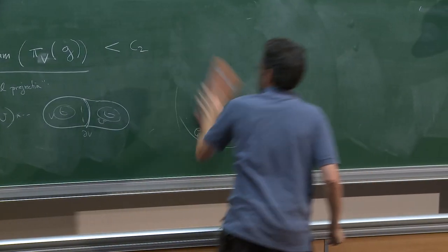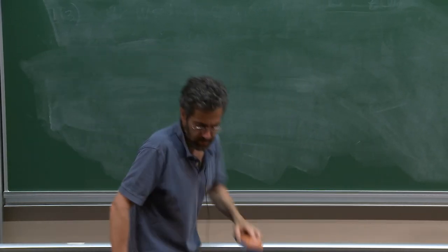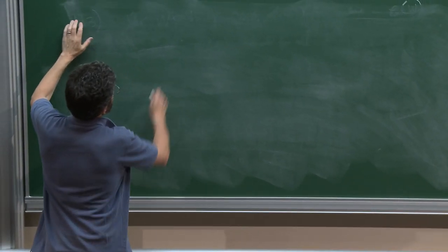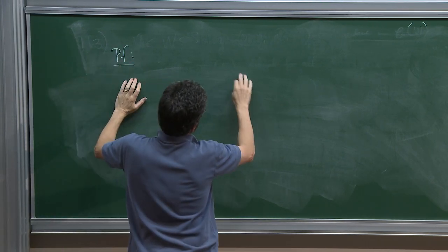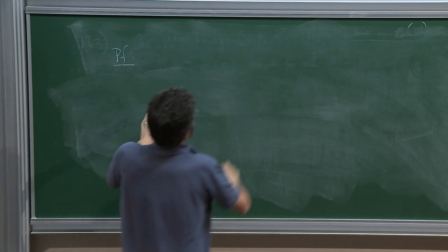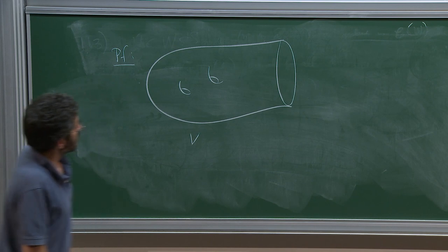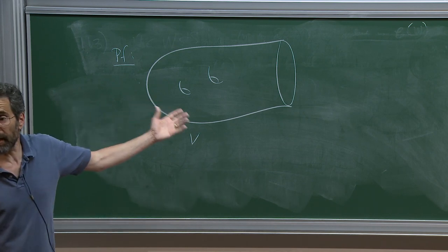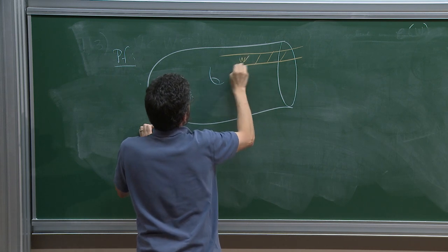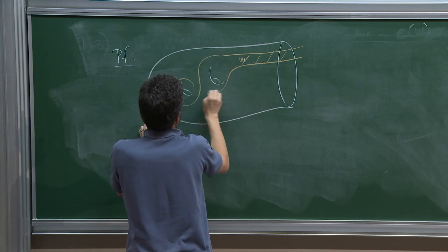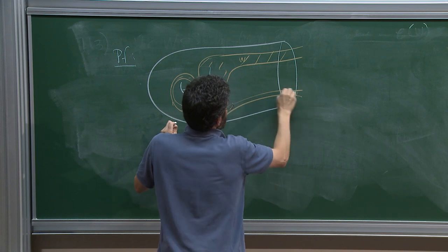Let me give a quick proof — this is not Behrstock's original proof but a proof due to Chris Leininger. The original proofs are complicated; the modern proofs are very simple. Here's the picture: let's draw V. And then we'll draw the intersection of boundary W with V — we'll draw that in orange. Here's W running through here in some way, possibly complicated. And somewhere else in this picture is mu, which I will draw also complicated.